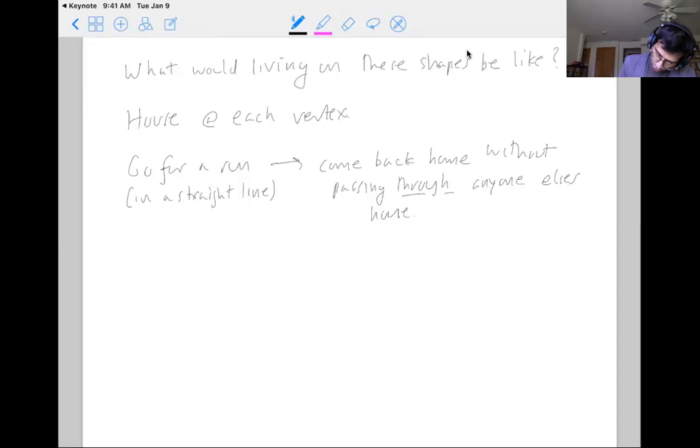So go for a run in a straight line and come back home without passing through anyone else's house. Another way of putting this is if you think about these as planets, one of my favorite children's books is The Little Prince. In The Little Prince, there is a prince who lives on a small planet, and there's a rose. And the prince has a sheep. And he's a very responsible pet owner, he wants to take the sheep for a walk, but doesn't want the sheep to eat the rose. So you could imagine our planet as we live at one house with the sheep, then at every other corner there is a rose.